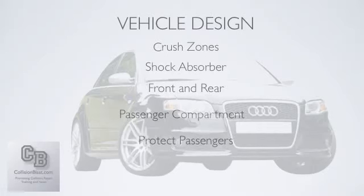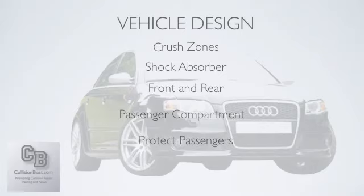We want to keep passengers safe. If it was you or your family in that car, you could care less about the car — you want yourself or your family members to be safe. That's where car designers are putting all these crush zones and stronger metals around the passenger compartment. The front and rear sections are designed to absorb the energy and take some of that impact, while your passenger compartment, with some of those stronger steels, is designed to protect the passengers.